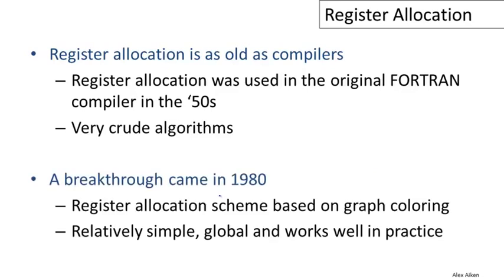Then about 30 years later in 1980, a breakthrough occurred where a group of researchers at IBM discovered a register allocation scheme based on graph coloring.